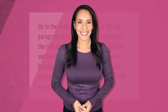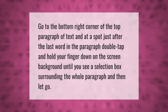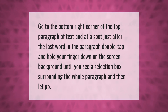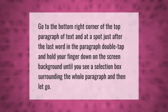Go to the bottom right corner of the top paragraph of text, at a spot just after the last word in the paragraph. Double tap and hold your finger down on the screen background until you see a selection box surrounding the whole paragraph, then let go.